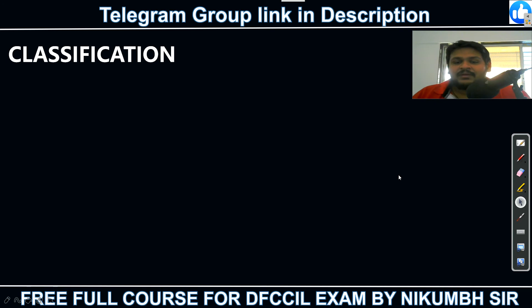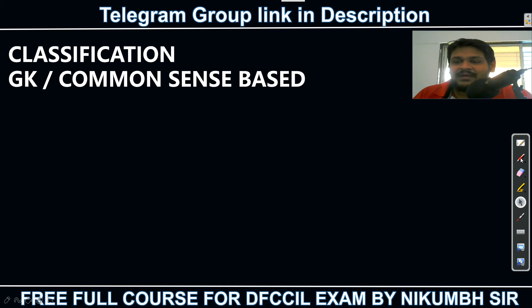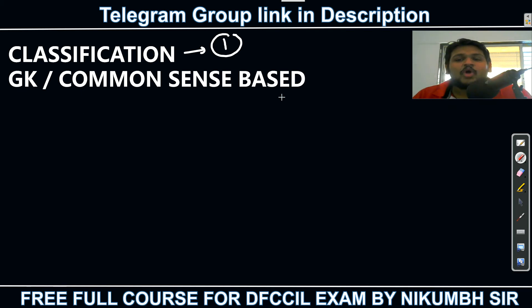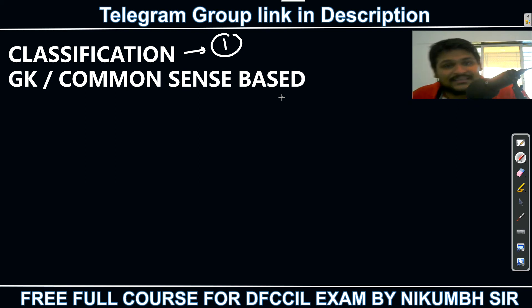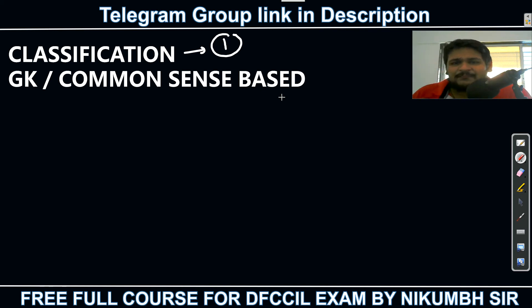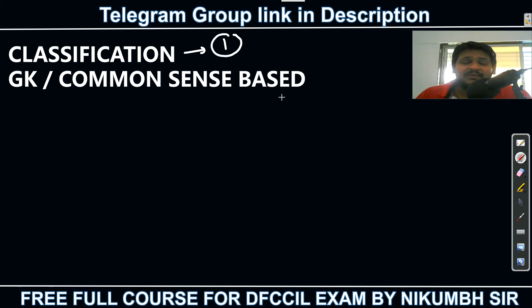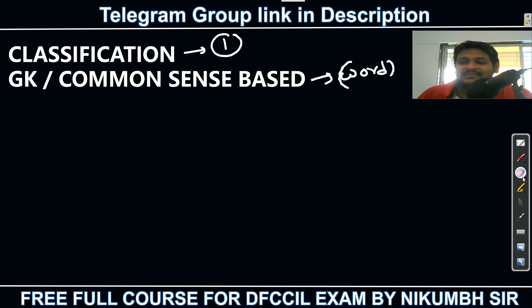Let's start. In the classification section, you can expect one mark. Out of 12 marks in the reasoning section — whether it is executive, technical post, junior executive, operations, or BD — this one mark comes from classification. The first type of question is GK or common sense based, which requires your general knowledge. Word-based questions will also be there.